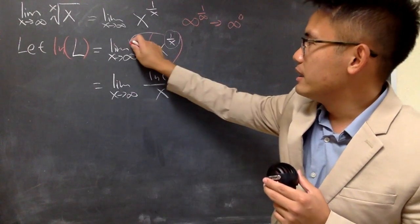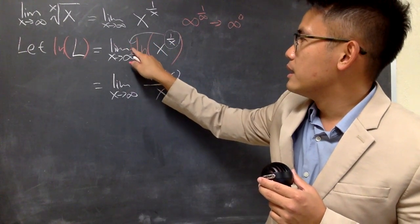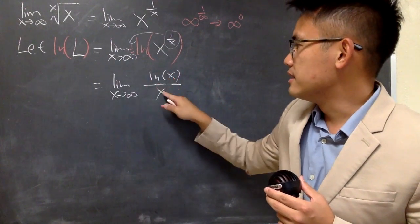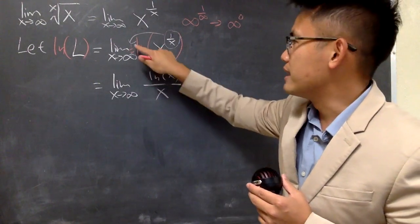So, once again, the 1 over x in the front, if you put it like this, 1 times ln x is ln x on the top. And then, the x is in the denominator. So, this is really nice.